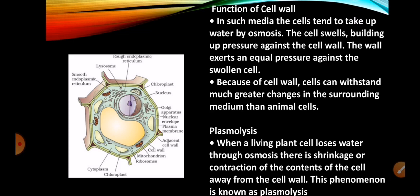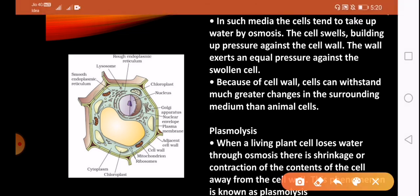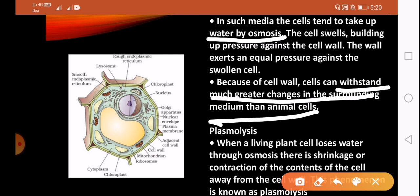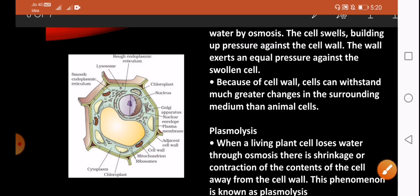See the function of the cell wall. Through the process of osmosis, the cell can withstand adverse conditions in the surrounding medium and survive. An important topic is when a living plant loses water through osmosis, there is shrinkage or contraction of the contents. When the plant loses water, that is exosmosis, and it will shrink or contract.